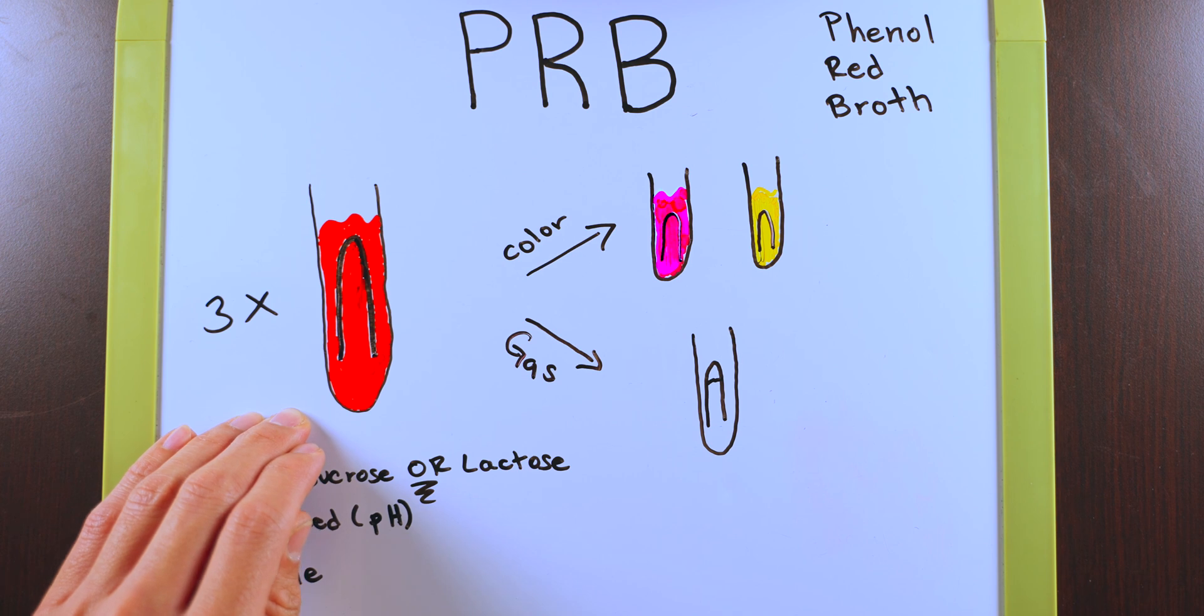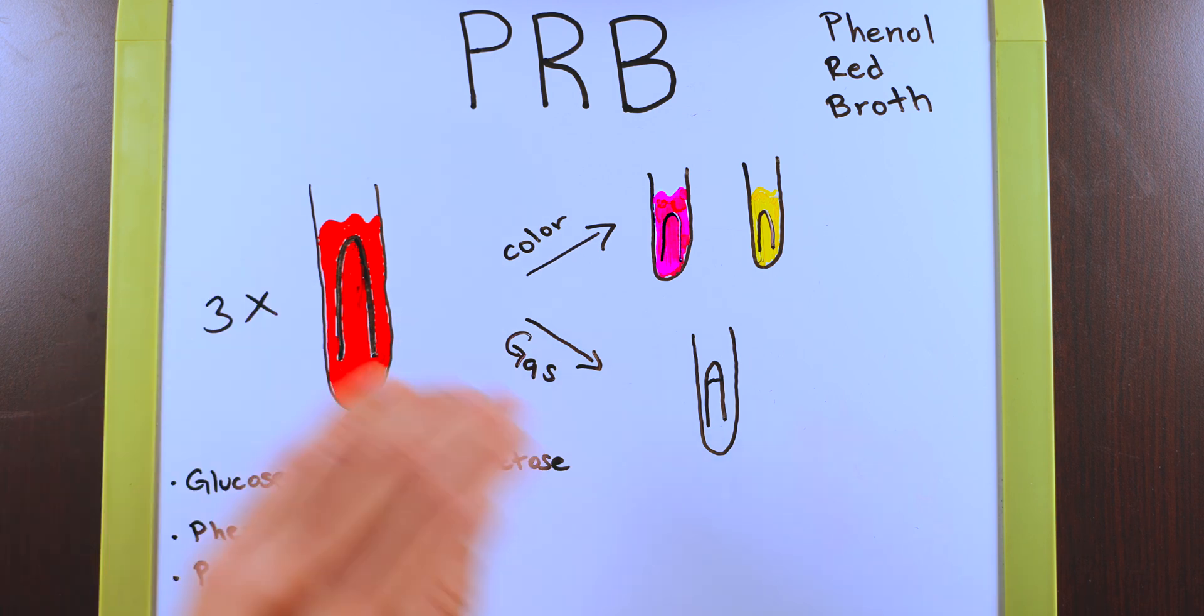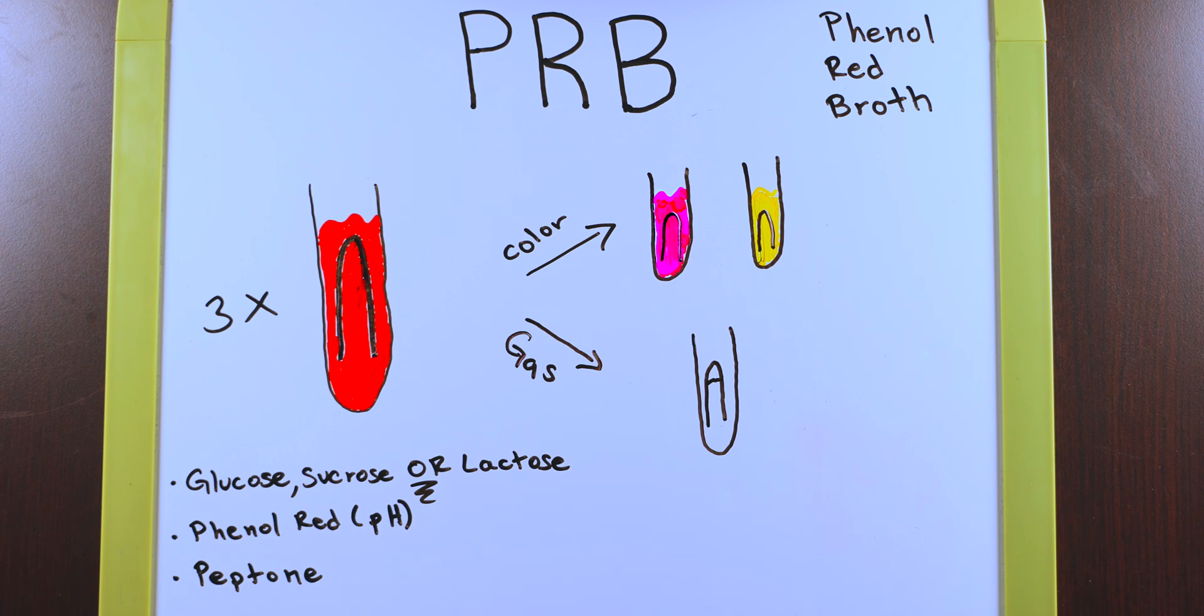You should be able to see a visual change from this Durham tube to this one to indicate to us that we have a positive gas production test here, meaning that the bacteria produce gas in its metabolic processes.